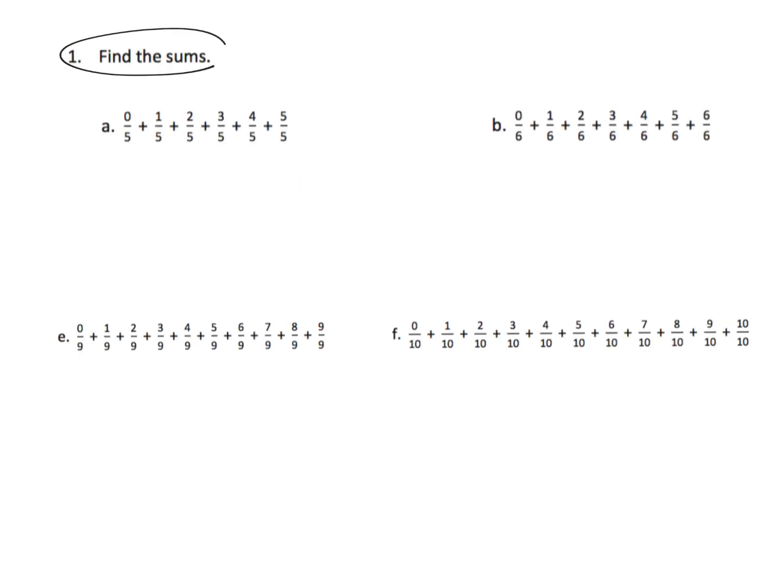So, it says, find the sums. And basically, what we're going to do is, parents and teachers, you can guide your students towards looking for the fractional pairs that equal one whole. For example, zero-fifths plus five-fifths, that's equal to one whole. And then, one-fifth plus four-fifths, that's equal to one whole. And then, two-fifths plus three-fifths, that's equal to one whole.